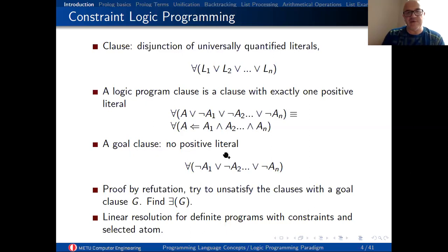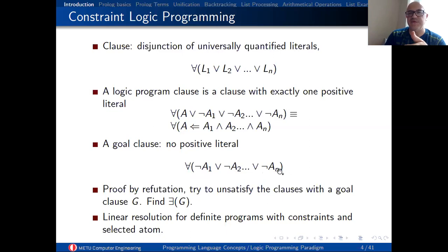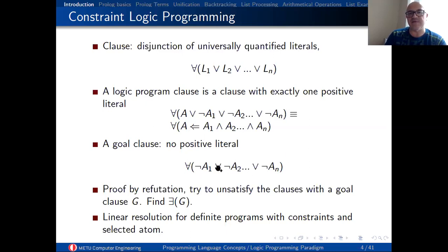So this will give us a dependency: if you like to prove A, you need to prove all of A1 through AN, and if you can, then A is true. A goal clause on the other hand is similar to that, but we don't have the head clause — there is no positive clause, everything is negative. So for all variables, one of them should fail.